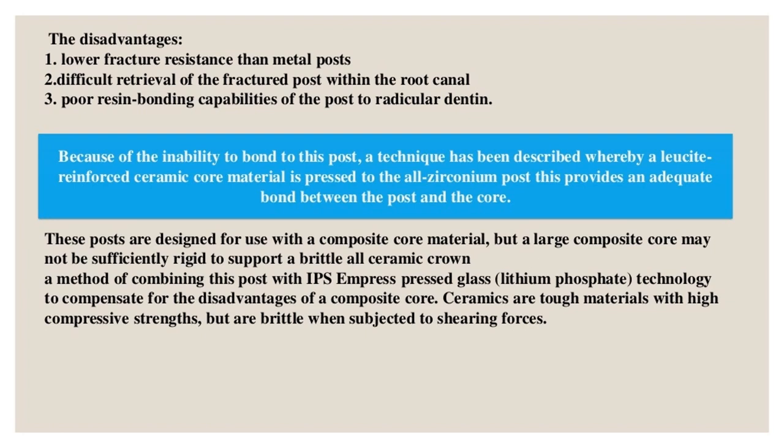Disadvantages of zirconia posts: lower fracture resistance than metal posts, difficult retrieval of a fractured post within the root canal, and poor resin bonding capabilities to radicular dentin. These posts are designed for use with composite core material, but a large composite core may not be sufficiently rigid to support a brittle all-ceramic crown. A method combining this post with IPS Empress pressed glass lithium phosphate technology compensates for the disadvantages of a composite core. Because of the inability to bond to this post, a technique using lucite-reinforced ceramic core material pressed to the all-zirconium post provides an adequate bond between post and core.